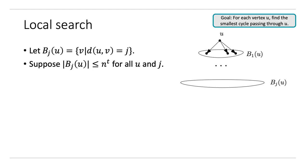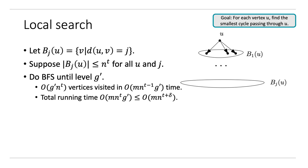With this assumption, we take a vertex u and do BFS from it until level g prime. So we visit at most g prime times N to the t vertices in each BFS, and since they have order M over N degree, this takes total time of M times N to the t times g prime, which is at most MN to the t plus delta. Now if we choose delta and t such that t plus delta is less than 1, we're good.